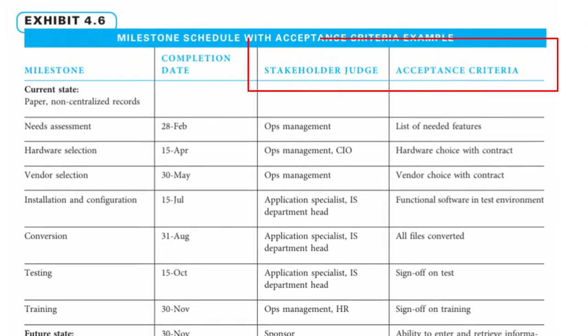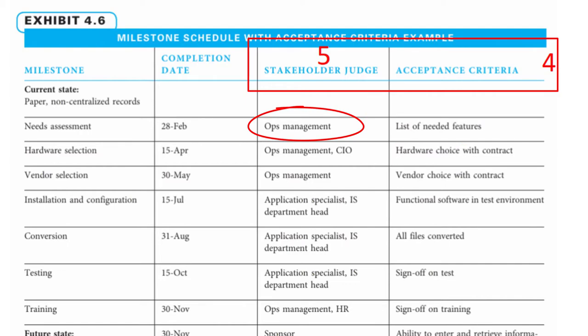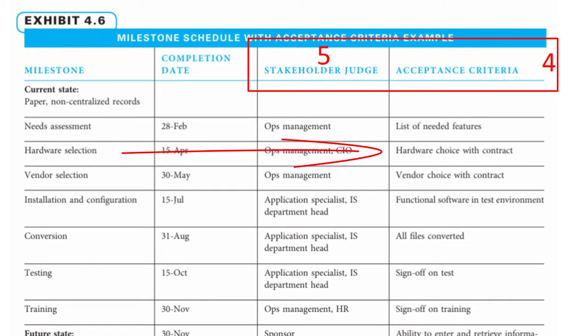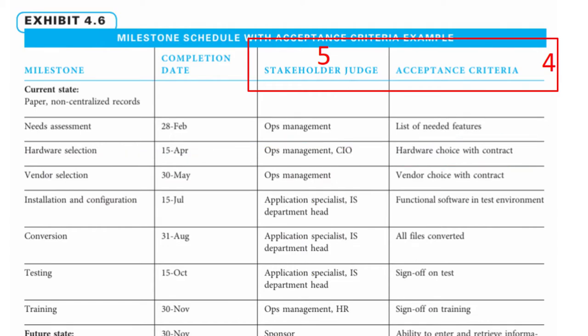For each milestone, determine the primary stakeholder or stakeholders and how the resulting deliverable will be judged. For example, the needs assessment should produce a list of needed features, and operations management will judge if the list is appropriate to indicate progression to hardware selection. The acceptance criteria for hardware selection is that there is a confirmed hardware choice and assigned contract, and so forth.